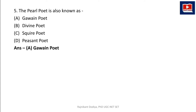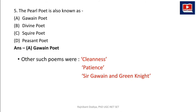The Pearl is a poem written in dream vision form in Middle English in the 14th century. Other poems attributed to this poet include Cleanness, Patience, and Sir Gawain and the Green Knight. So the Pearl Poet is also known as the Gawain Poet — an unknown poet writing in dream vision form.